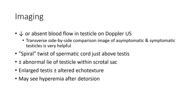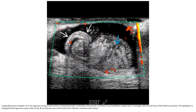Imaging: Increased or absent blood flow in the testicle on Doppler ultrasound. Transverse side-by-side comparison image of asymptomatic and symptomatic testicle is very powerful. Findings include spiral twist of the spermatic cord just above the testes, abnormal lie of testicles within the scrotum, enlarged testicles with heterogeneous echogenicity, and possible hyperemia after torsion.